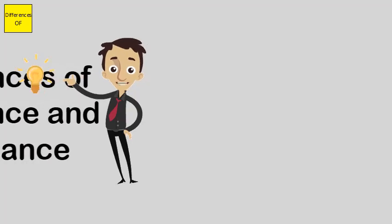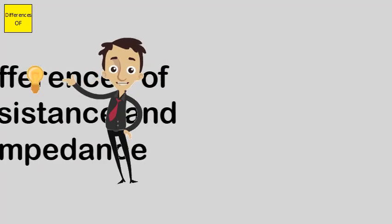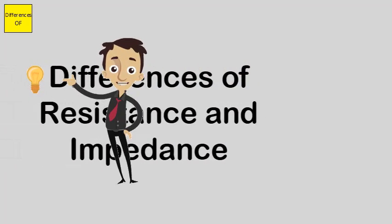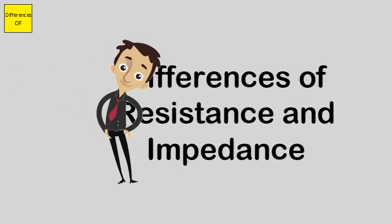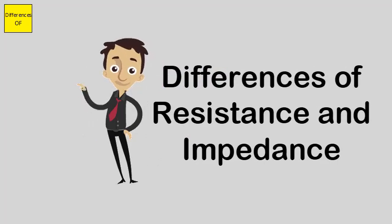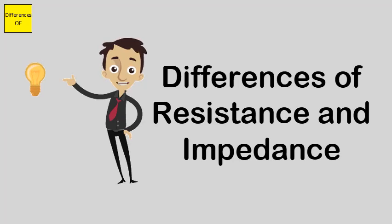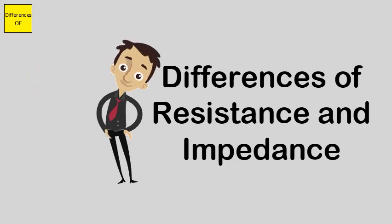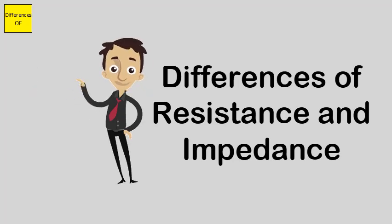Difference between Resistance and Impedance. Resistance is something that opposes or resists the flow of current. Impedance is often described as the measure of the opposition to an alternating current, AC.